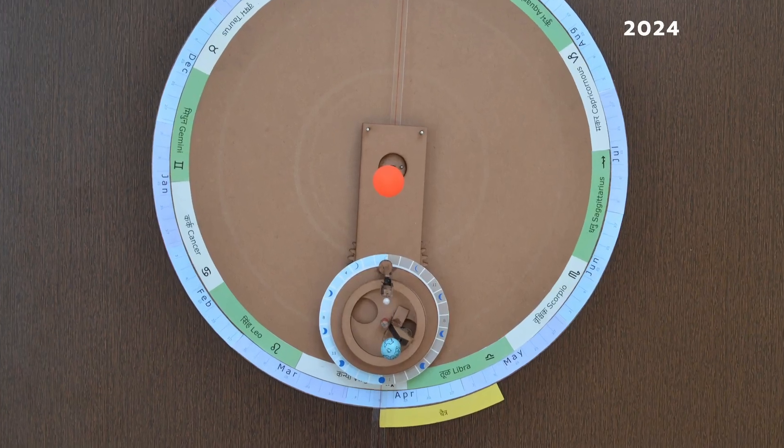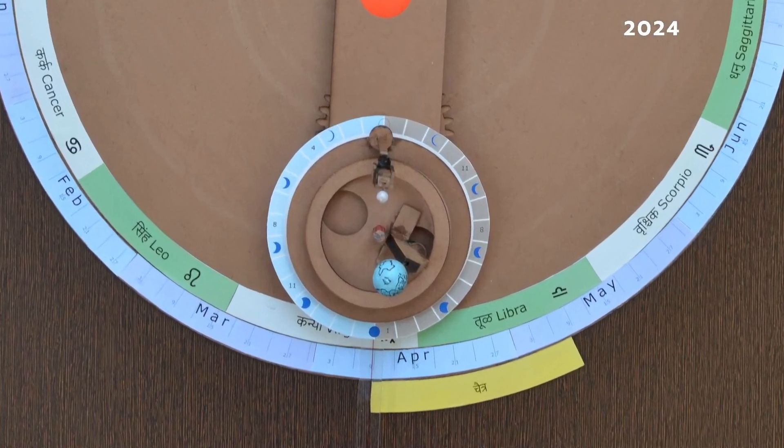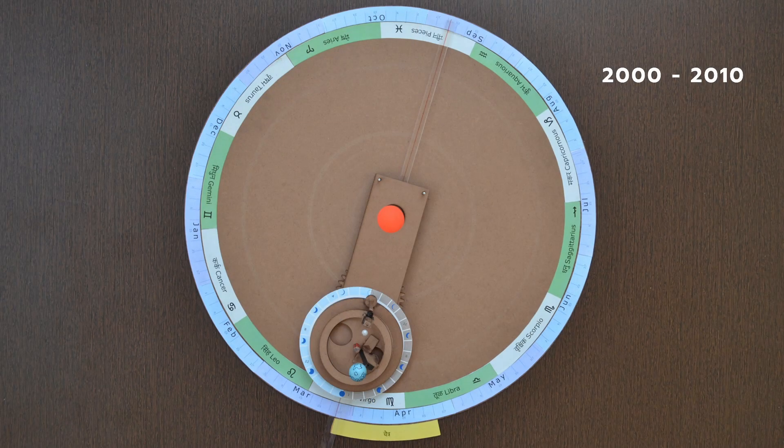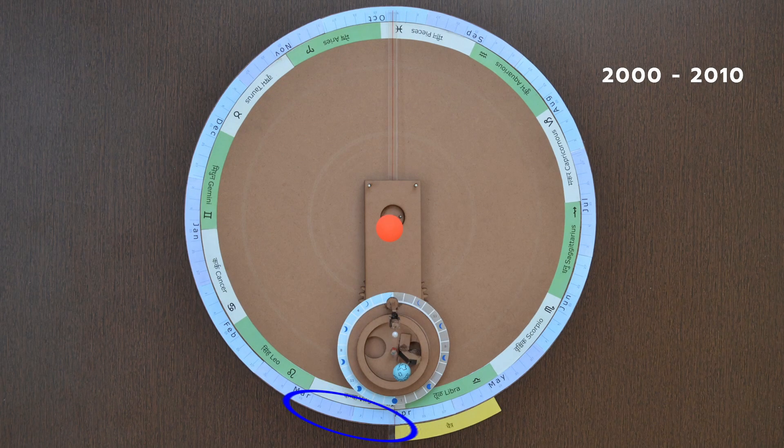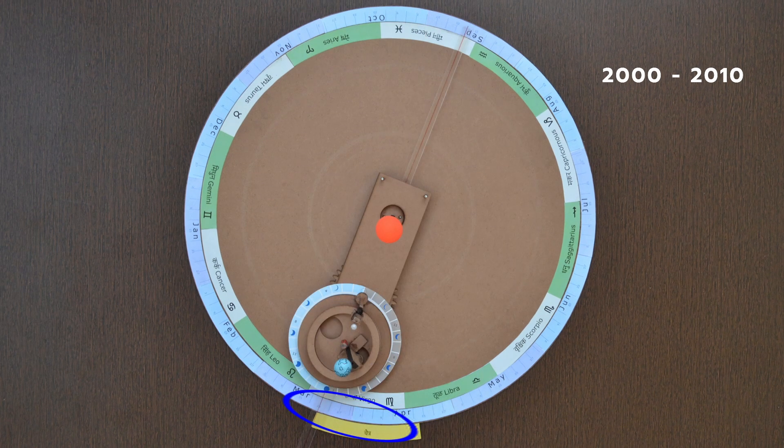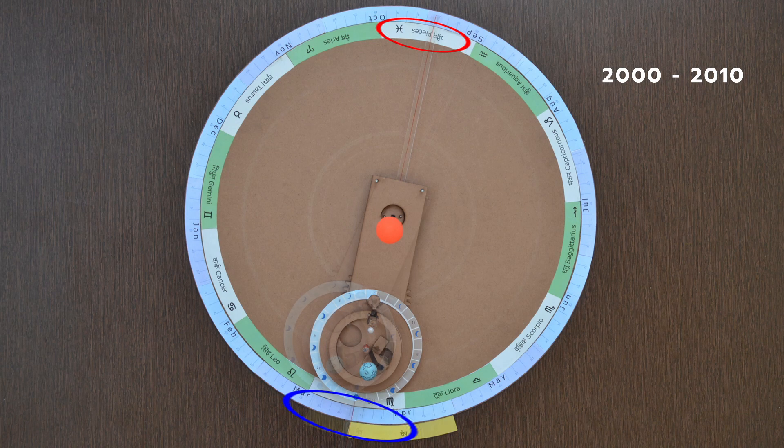In 2024, Gudi Padwa will be on 9th April, somewhat closer to 2nd April in the year 2021. Introduction of extra month or Adhikmas enables synchronization of solar as well as lunar cycles in Hindu calendar. If one considers the start of Chaitra month for the year 2000 till 2010, Sun is always in Meen Rashi.